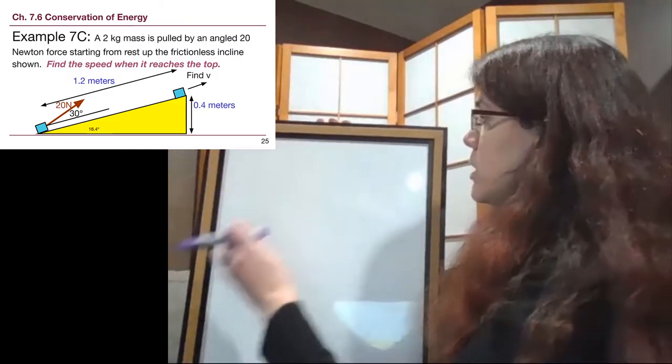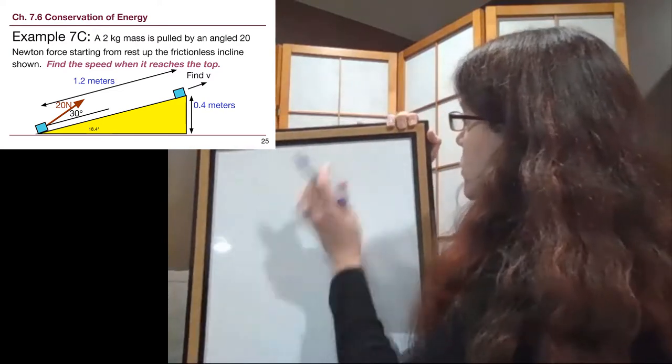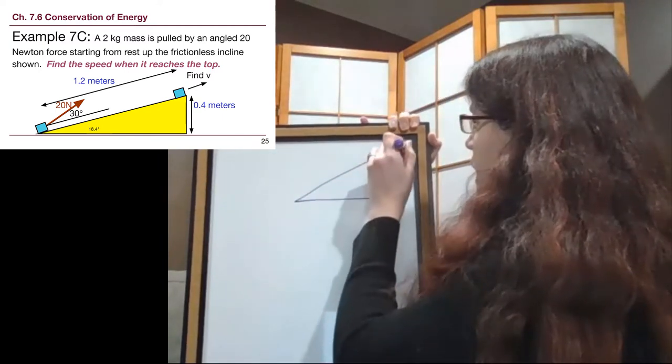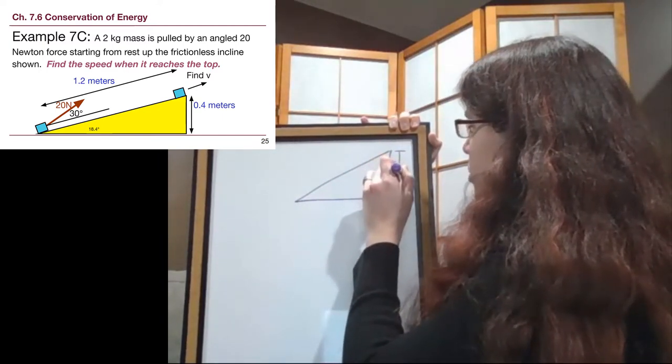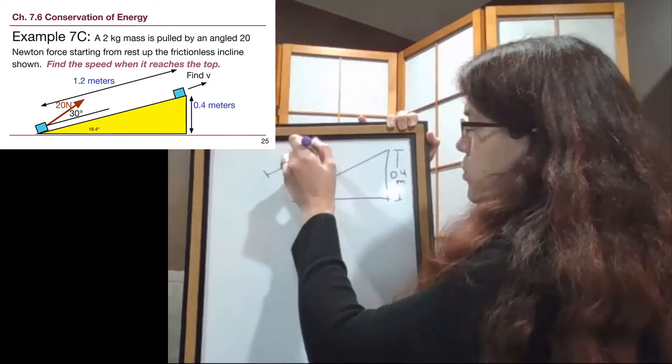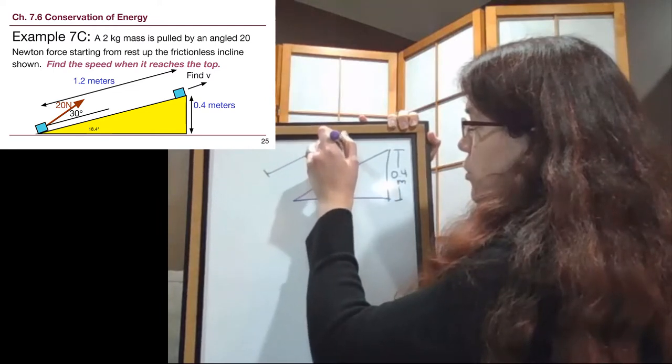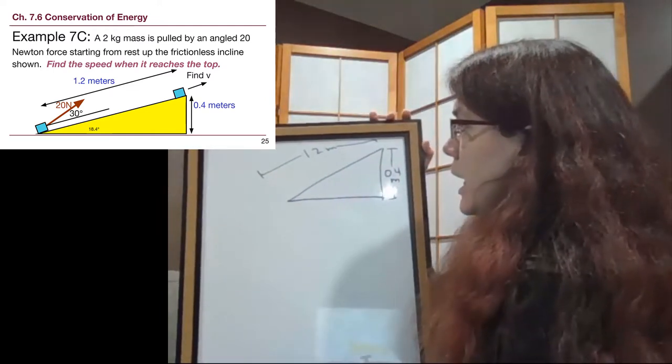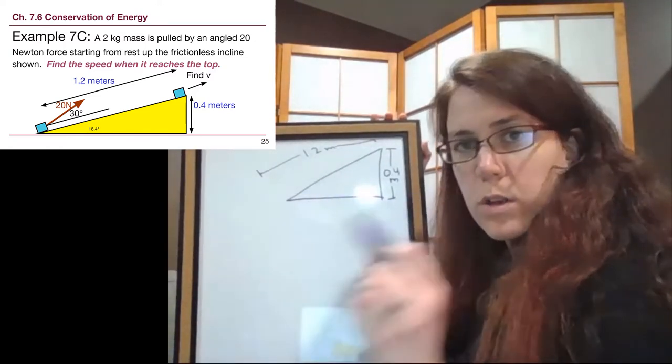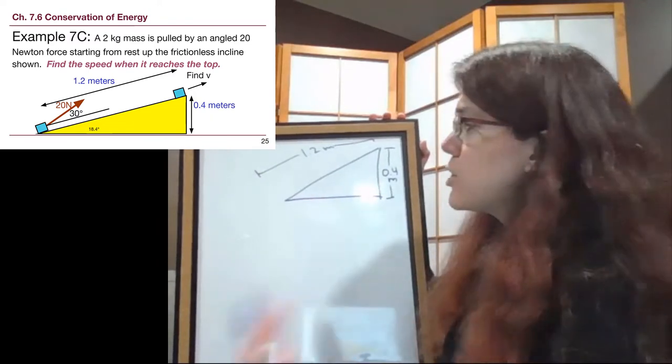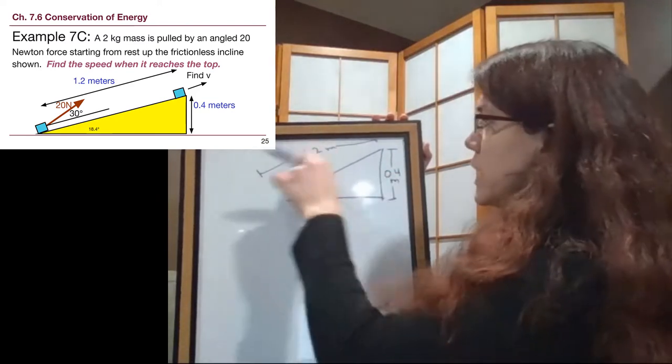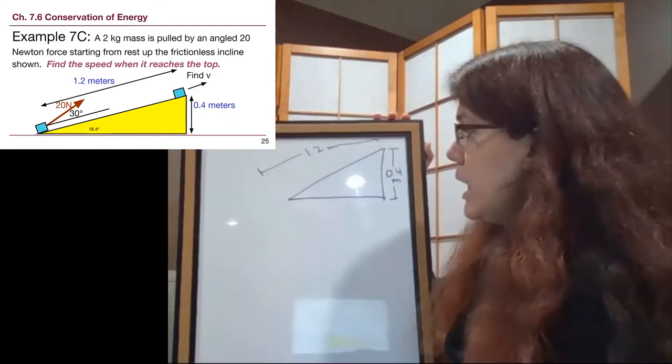Okay, so we can start out by drawing the situation. So we have a ramp here. And we're told that it is 0.4 meters tall, that the ramp is 1.2 meters across.